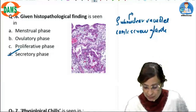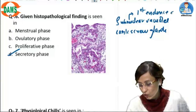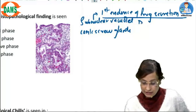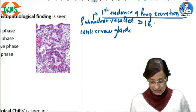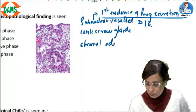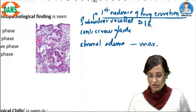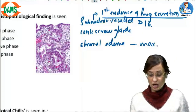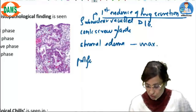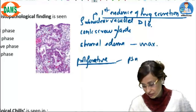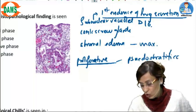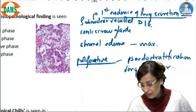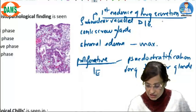Subnuclear vacuolation is the first histopathological evidence of progesterone secretion and can be seen as early as day 16. Maximum stromal edema is also seen in the secretory phase. So subnuclear vacuoles, corkscrew glands, and stromal edema are all features of the secretory phase. In the proliferative phase, you will have pseudostratification and long tubular glands — these findings are due to estrogen, whereas secretory phase findings are due to progesterone.